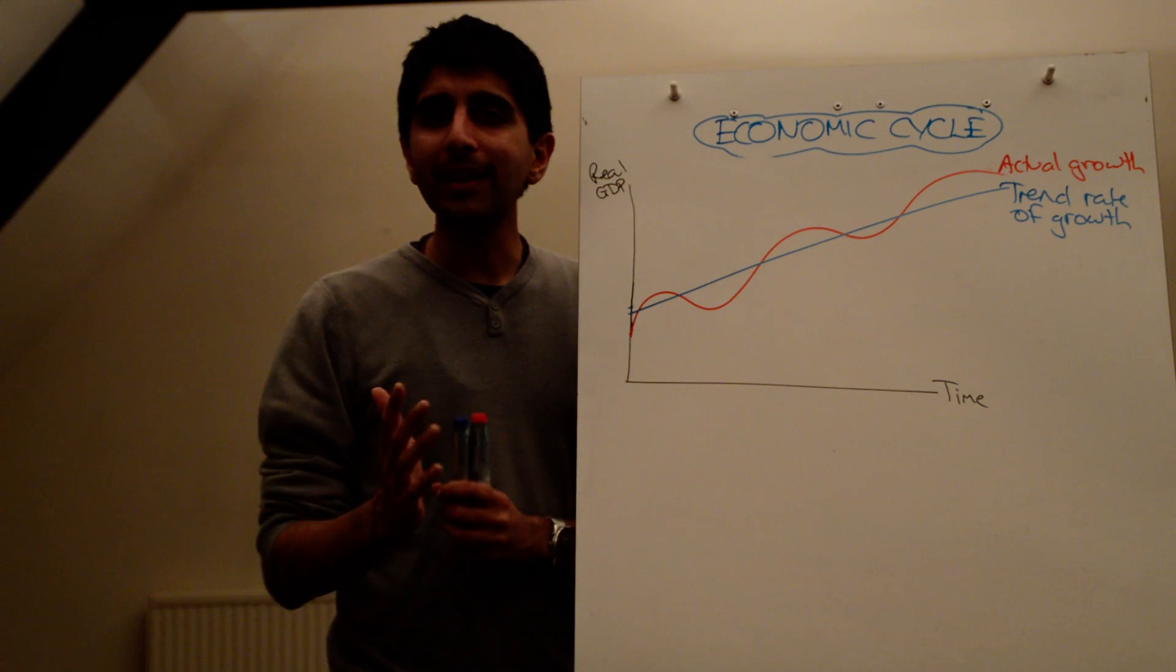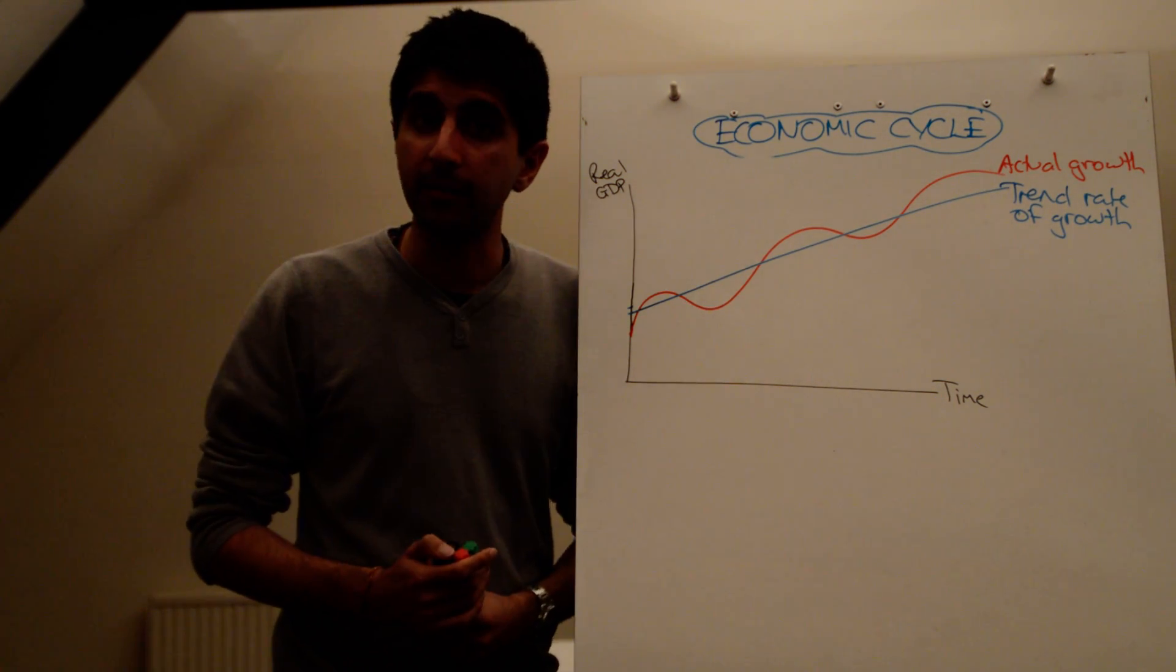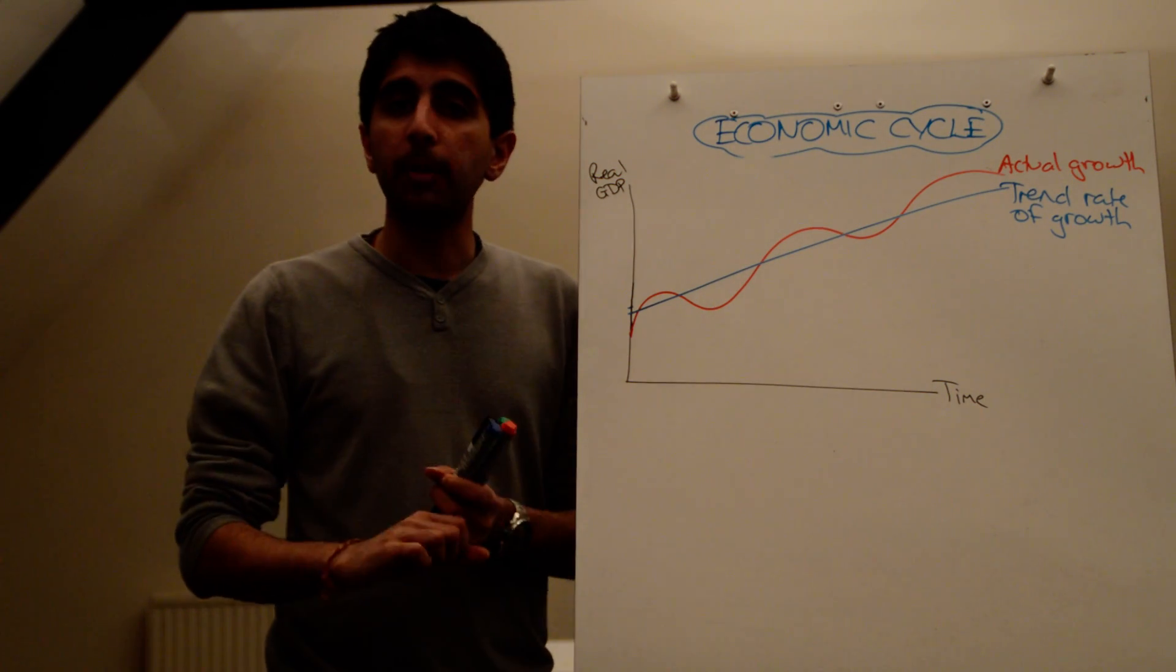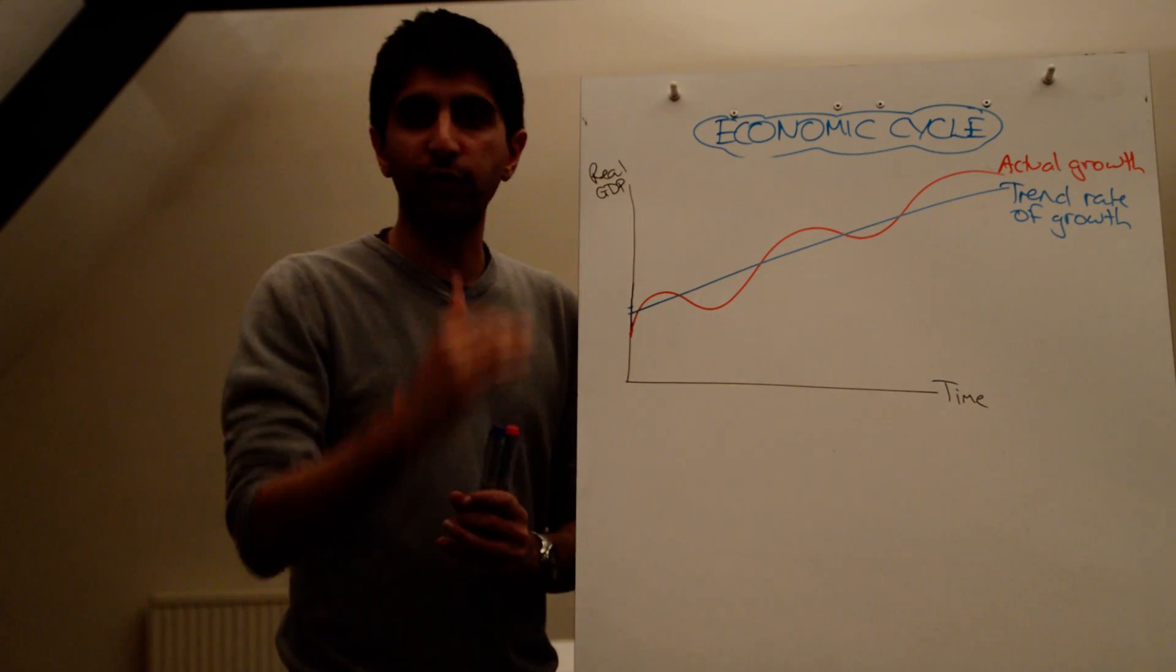So when there is a demand-side shock, let's say a big housing market crash, that might lead to a huge fall in aggregate demand. It might be a credit bubble that bursts, which again can lead to a huge fall in aggregate demand. So demand-side shocks, which mean growth falls rapidly.